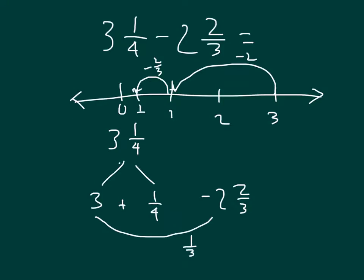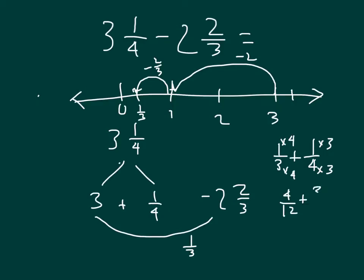But really we're supposed to be starting at 3 and 1 fourth, not 3. So really we should be 1 fourth more, meaning our answer should be 1 fourth more than 1 third. So our answer then is 1 third plus 1 fourth. We get a common denominator just as before: 1 times 4 is 4 twelfths, plus 3 twelfths, which is equal to 7 twelfths.